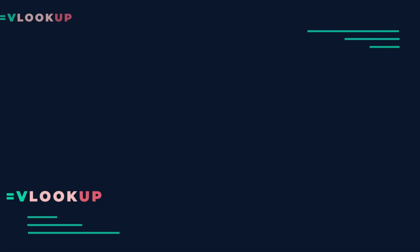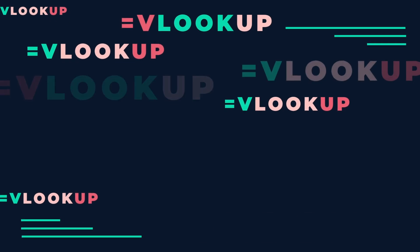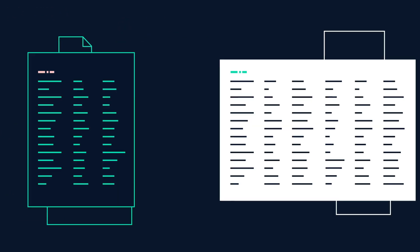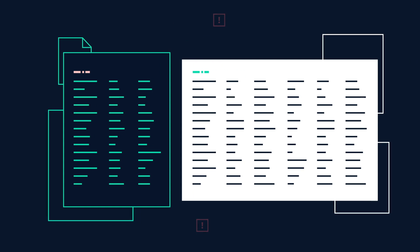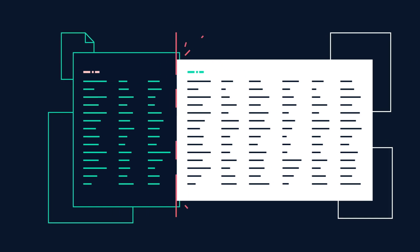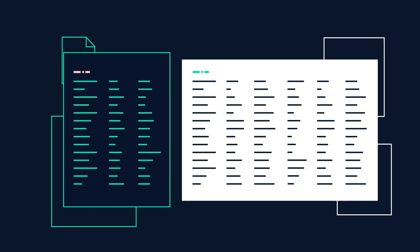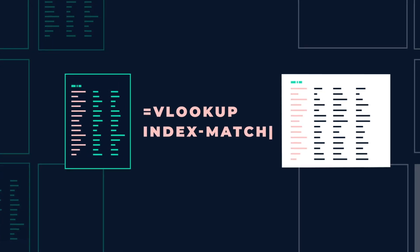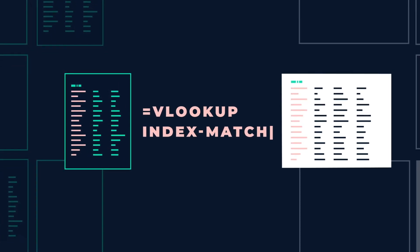Is it just us, or is repeating VLOOKUP a recipe for madness? The trouble with blending data the old-fashioned way is that spreadsheets aren't agnostic. Spreadsheet programs recognize only their preferred format, and they can't step outside that format without direct input from you via manual tools like VLOOKUP or IndexMatch.